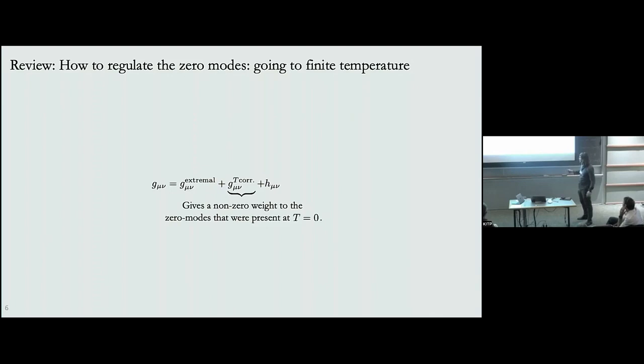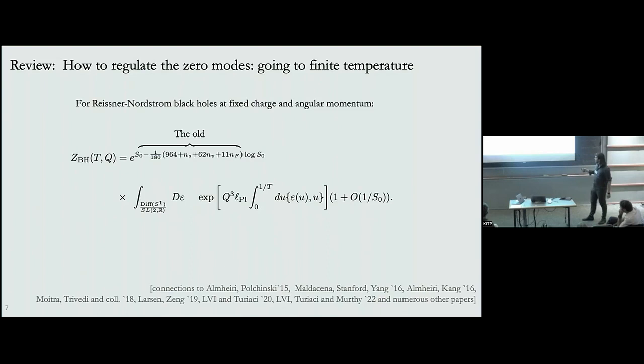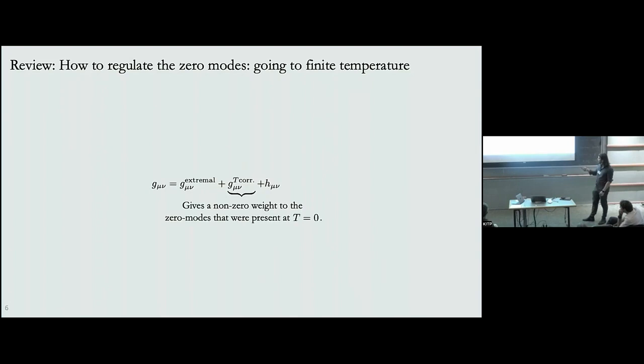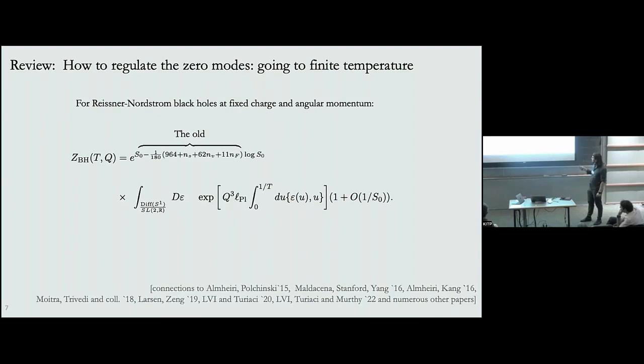All the modes have a weight proportional to the temperature itself. This means that turning on a temperature causes all these modes — previously zero modes at zero temperature — to become strongly coupled and have a very large effect. If you plug in the most arbitrary H_μν into this form of the metric, what pops out is precisely the Schwarzian derivative, which appears at quadratic order and persists at higher orders in the expansion.